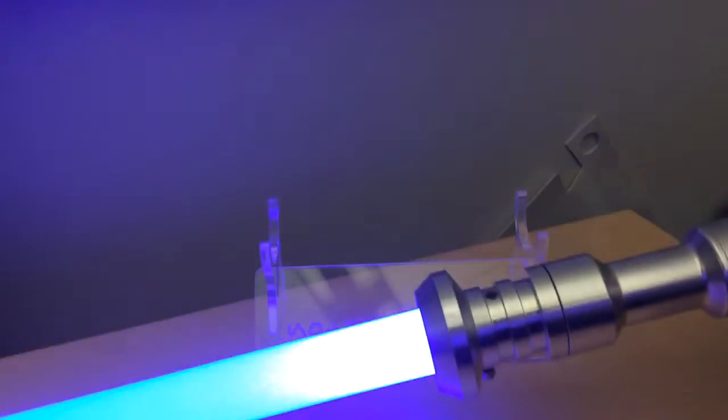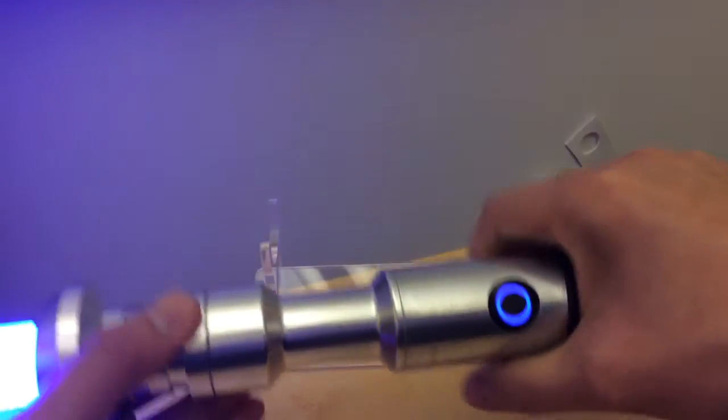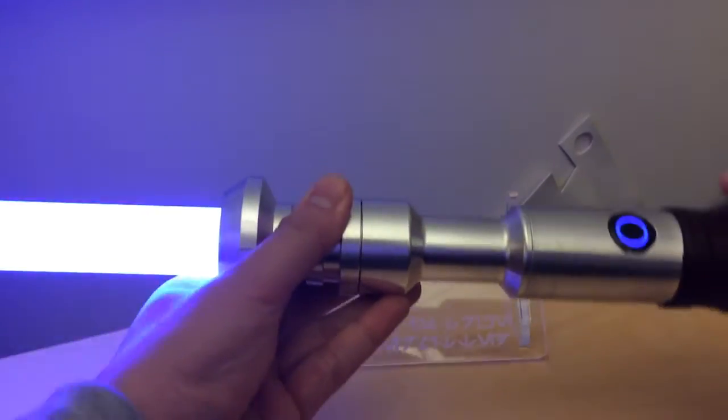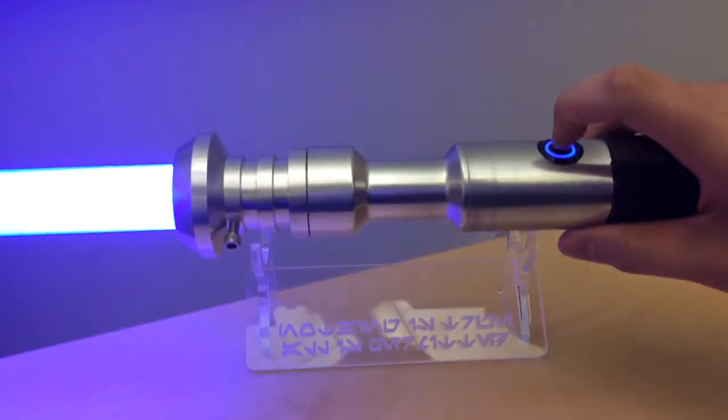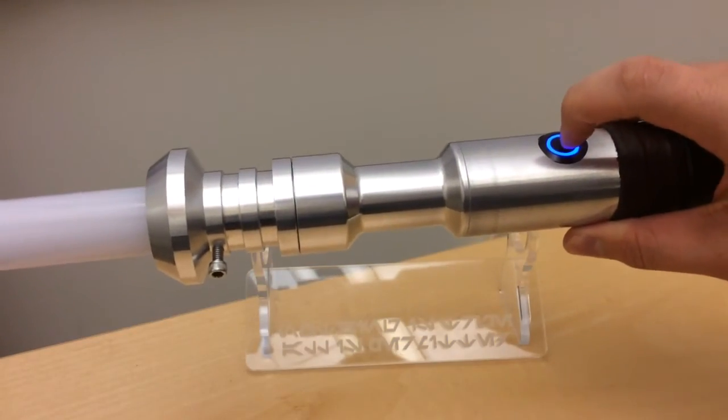But yeah, I've got two sound fonts on here. This is the rogue sound font which is kind of like a Jedi sound, but it's got a little darker menacing hum to it. And the other one is Obi-Wan's lightsaber from episode 1 and his duel with Darth Maul.